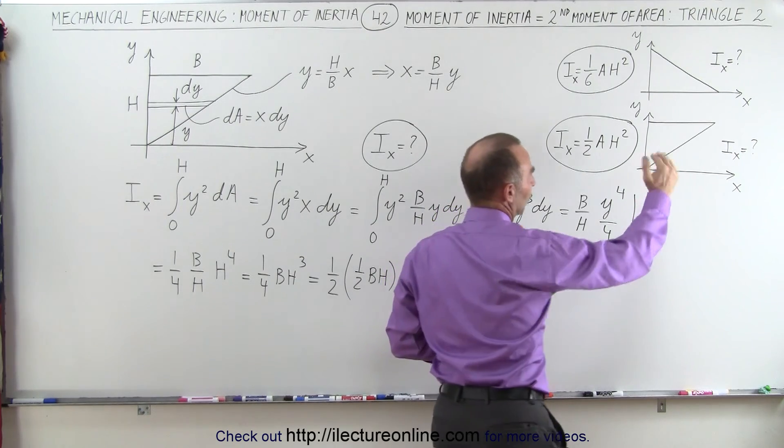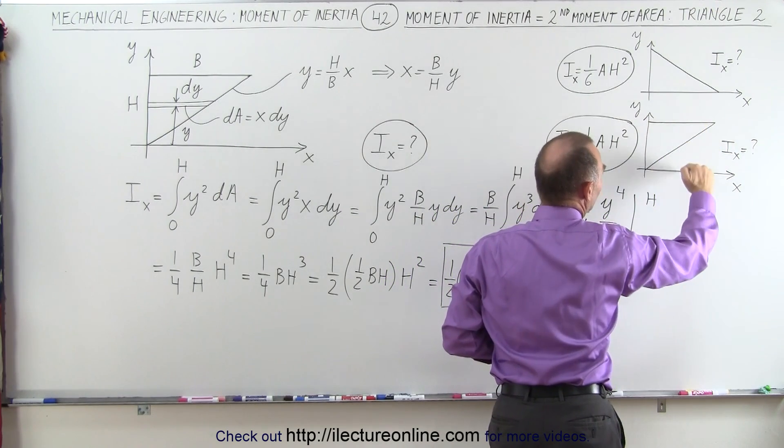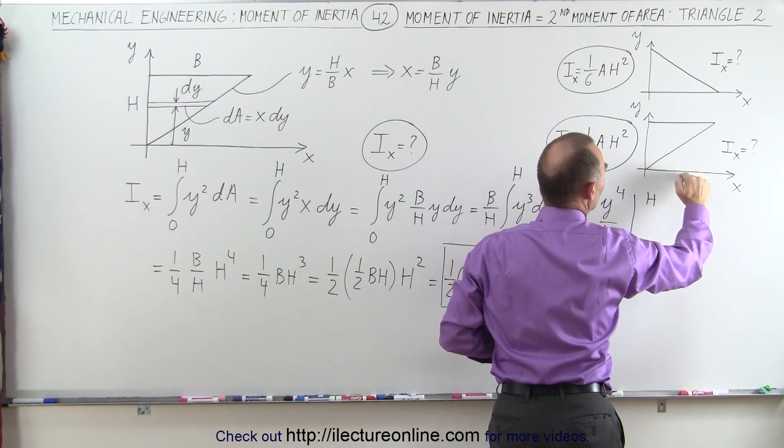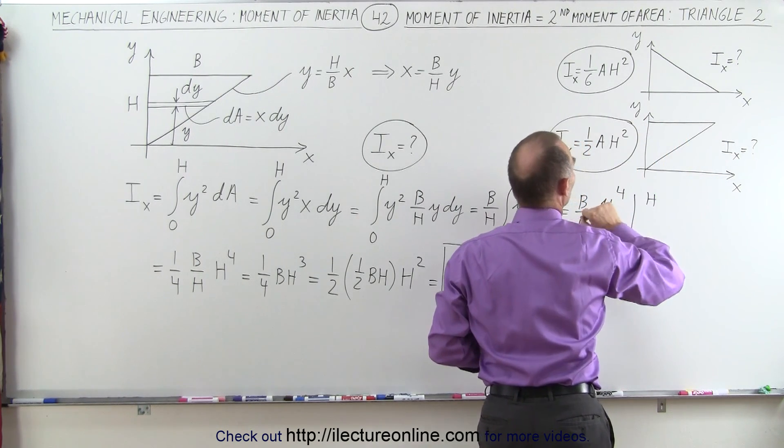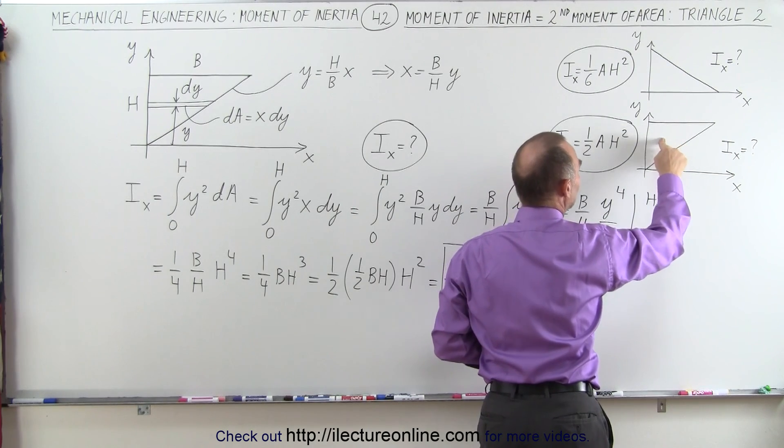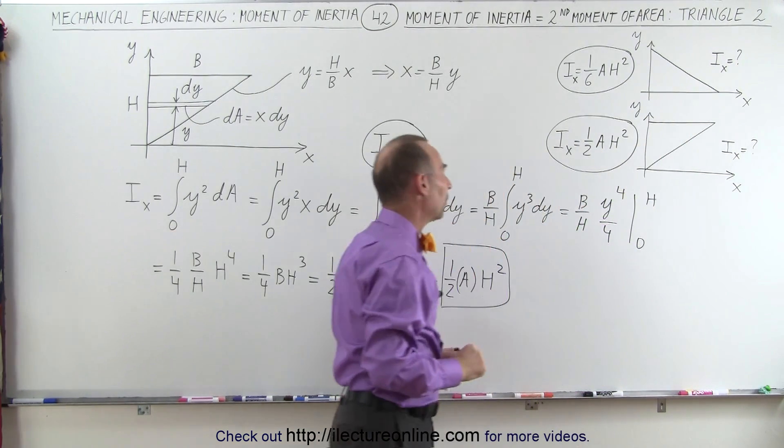And the reason is because the triangle is flipped. More of its area is farther away from the axis of rotation, the x-axis. So we expect a larger moment of inertia here. Notice the moment of inertia of this one is 3 times the moment of inertia of that one.